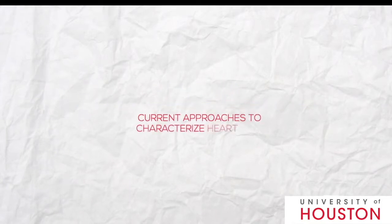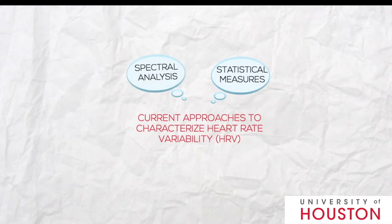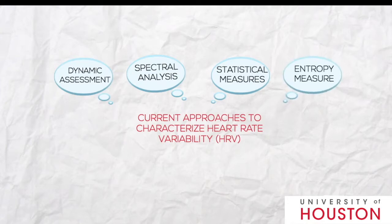We are going to talk about the current approaches to characterize heart rate variability: the statistical measure of the properties of RR intervals, spectral analysis of heart rate, determining state dynamical system assessment of heart rate, and approximate entropy measure of RR intervals.